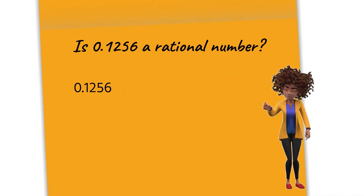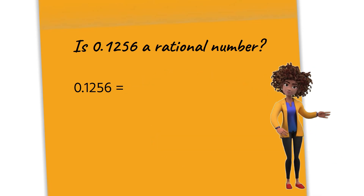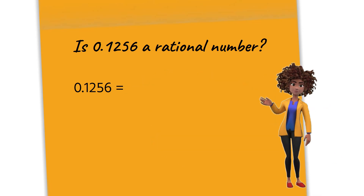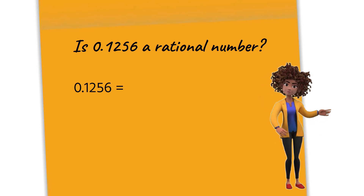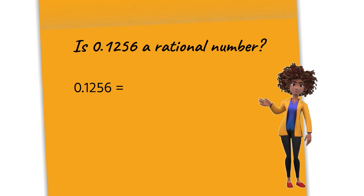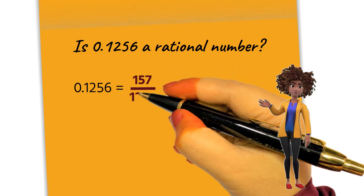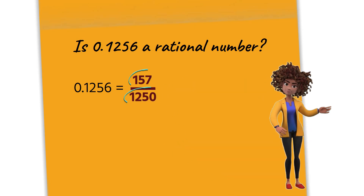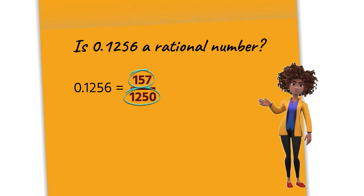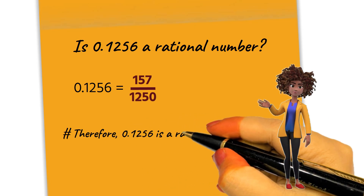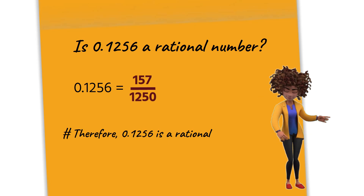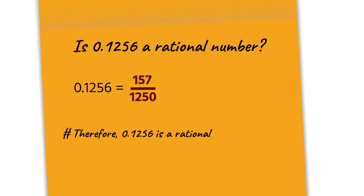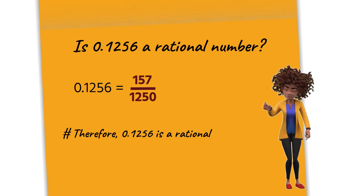Is the number 0.1256 a rational number? Yes, 0.1256 is a rational number. It can be written as 157 over 1250, where both 157 and 1250 are integers and 1250 is not 0. Therefore, 0.1256 is a rational number because it can be expressed as the ratio of two integers. In general, any decimal with a finite number of digits after the decimal point can be expressed as a rational number.